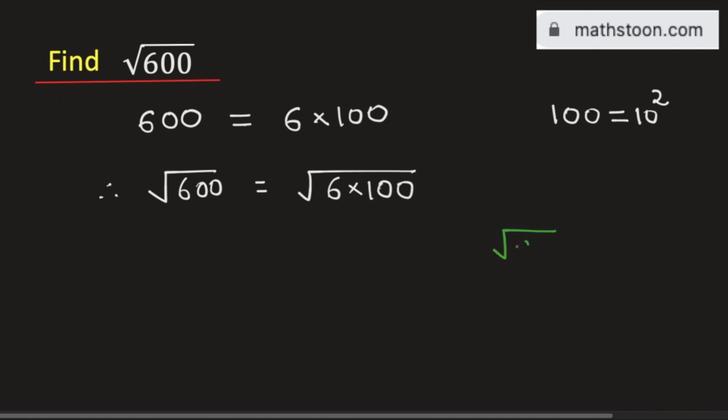Now using the rule: square root of a times b is equal to square root of a times square root of b. This can be written as square root of 6 times square root of 100.